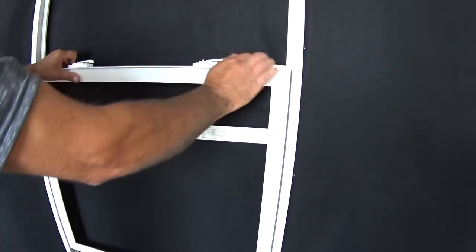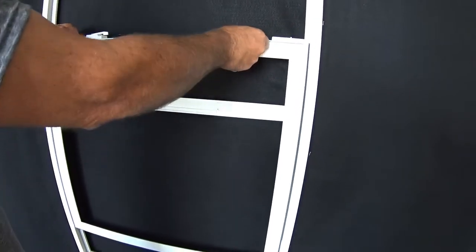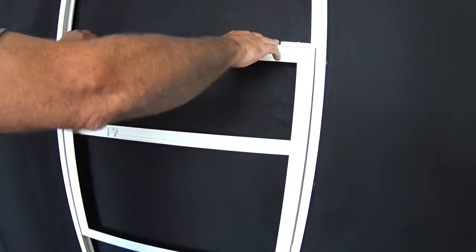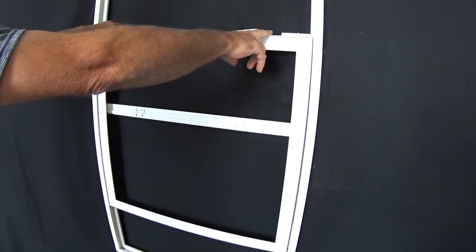Now rotate the sash back in, and now the balance is reinstalled. This video, the glass has, the windows have no glass in it, just so it's easier to see the balance components as we demonstrated.